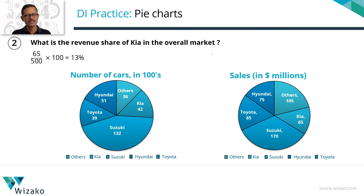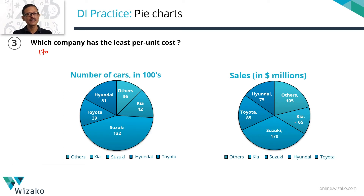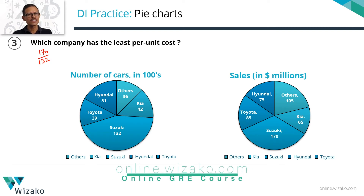The third question is a little more difficult: which company has the least per unit cost? For Suzuki, we take 170 million divided by 132 hundreds — so the fraction is 170 by 132. We don't need to worry about the extra zeros since they're the same across all manufacturers. Multiplying by a million and dividing by 100 gives the exact dollar value, but we just need to compare the fractions.